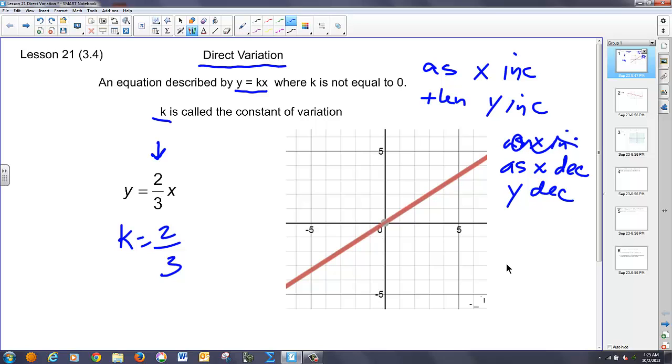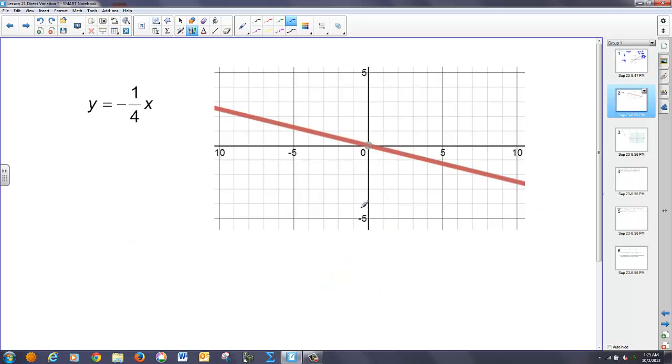And we can see that in our next slide. In this case, here's my y equals kx form. And k in this case is negative one-fourth. And you can see x is decreasing here, and so is y. So as one goes up, the other goes up. As one goes down, the other goes down.